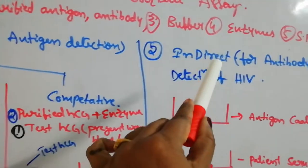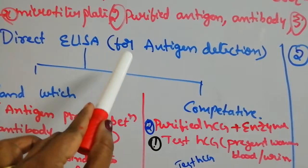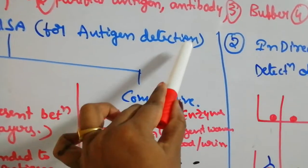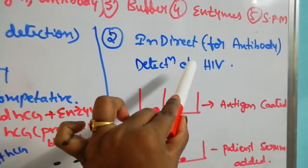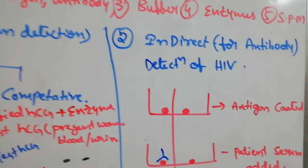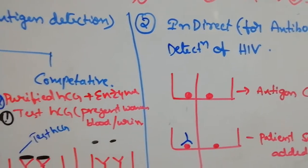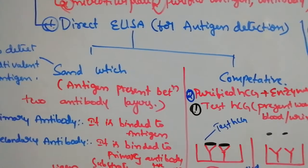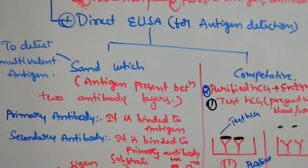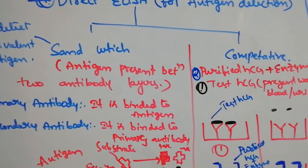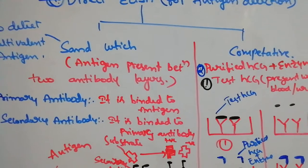Direct ELISA and indirect ELISA. Direct ELISA is used for detection of antigen. Indirect ELISA is used for detection of the antibody. In direct ELISA, there are two subtypes present: sandwich type and competitive type.